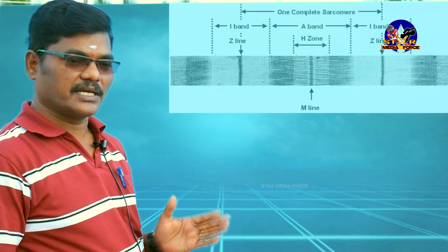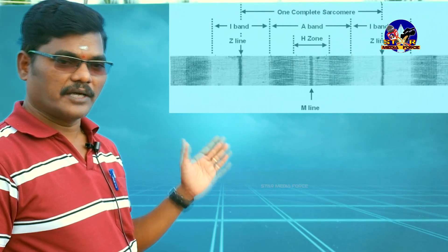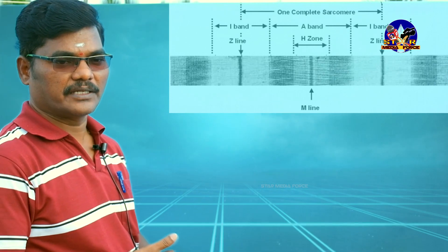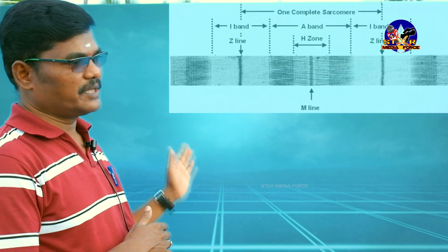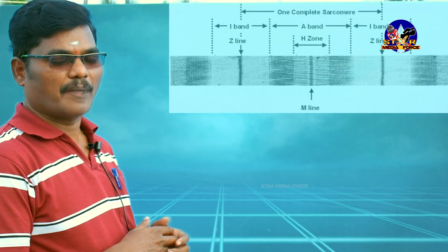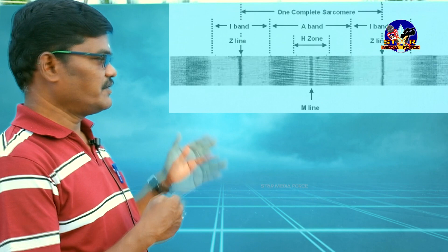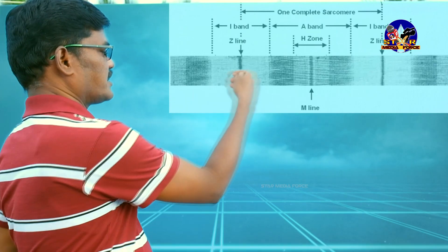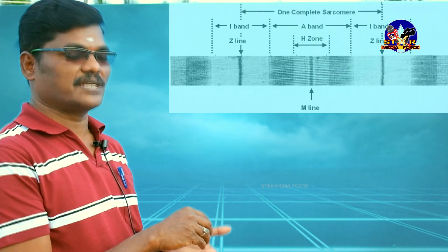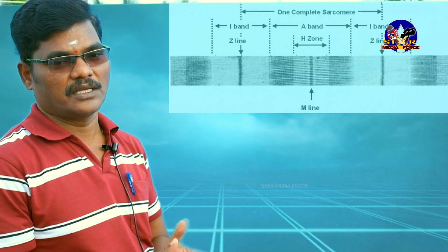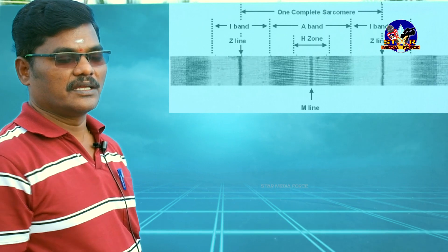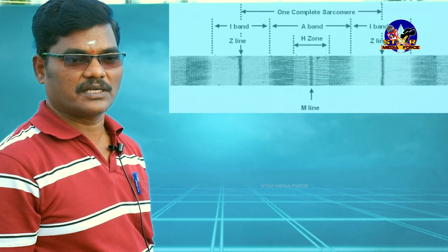In the rod-like structure, they have the dark band — otherwise called the A band — and light band — otherwise called the I band. This arrangement gives the appearance of a striated pattern, meaning stripes. This is why these are called striated muscles, also called striped muscles, due to the presence of A band and I band.